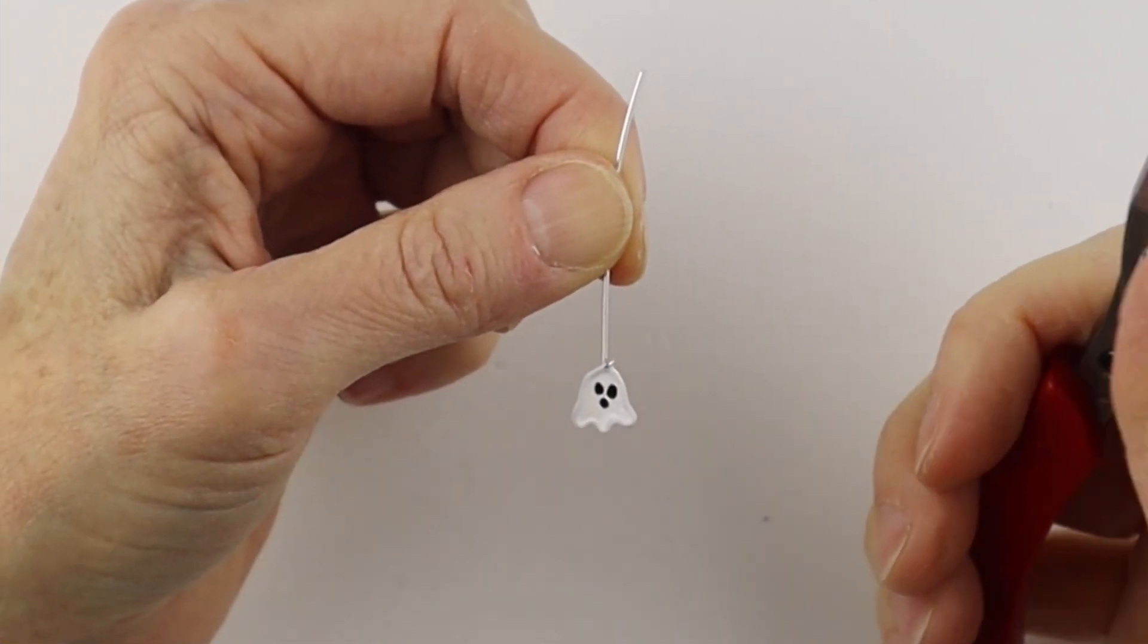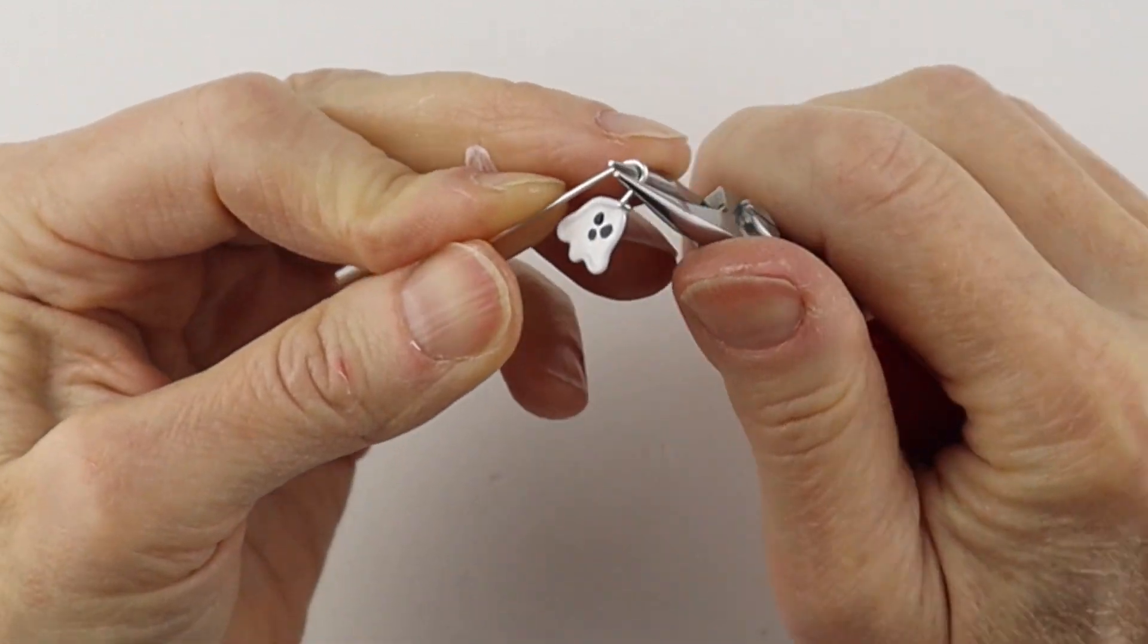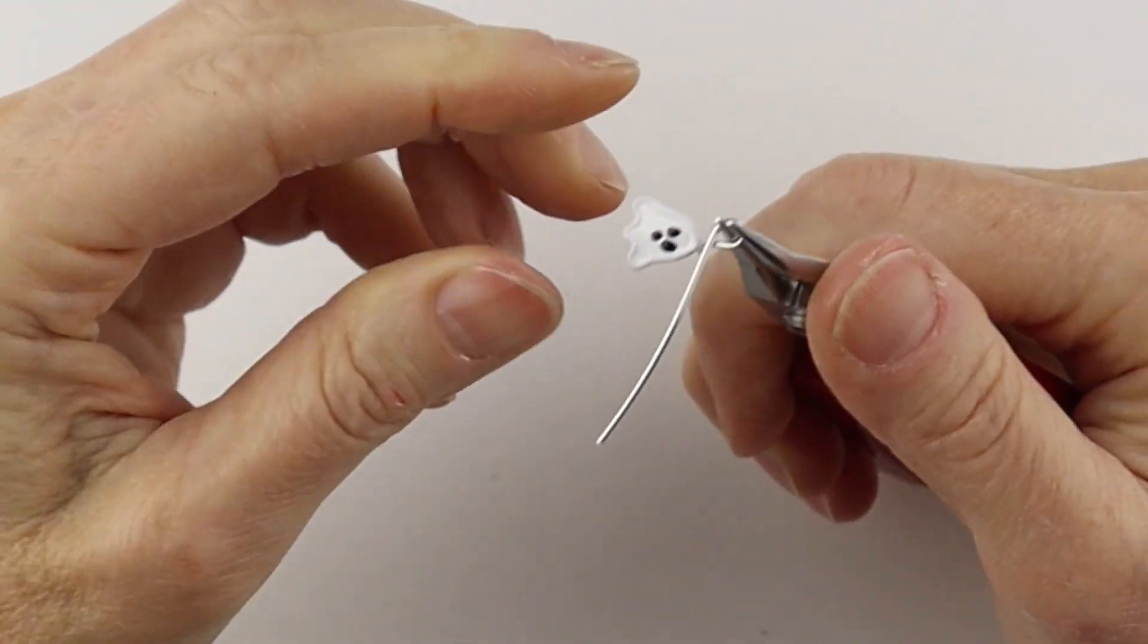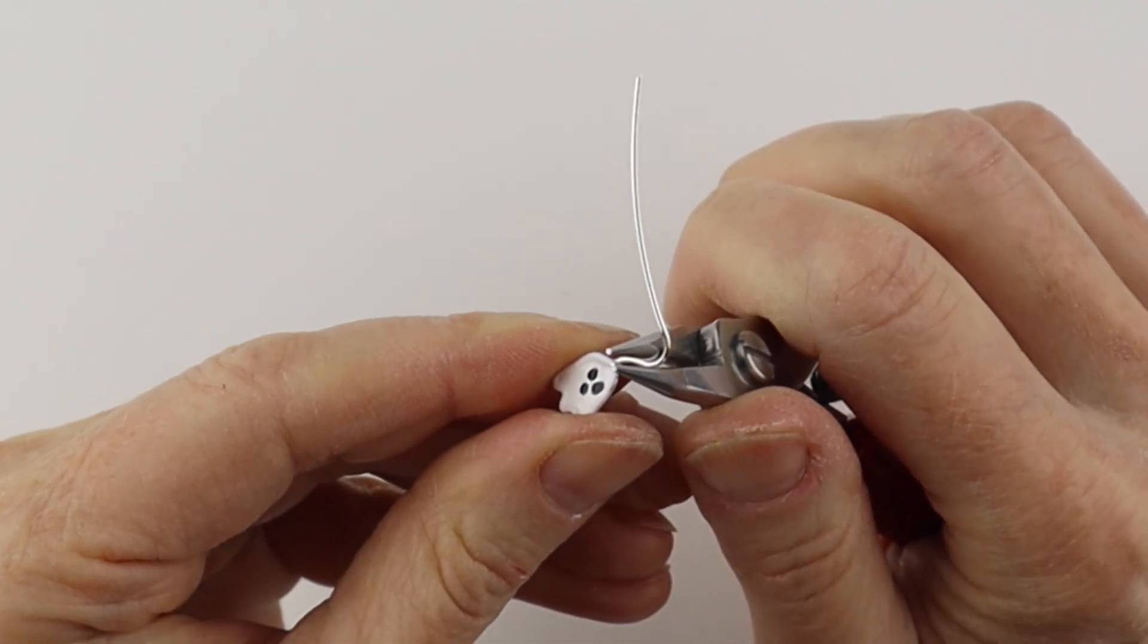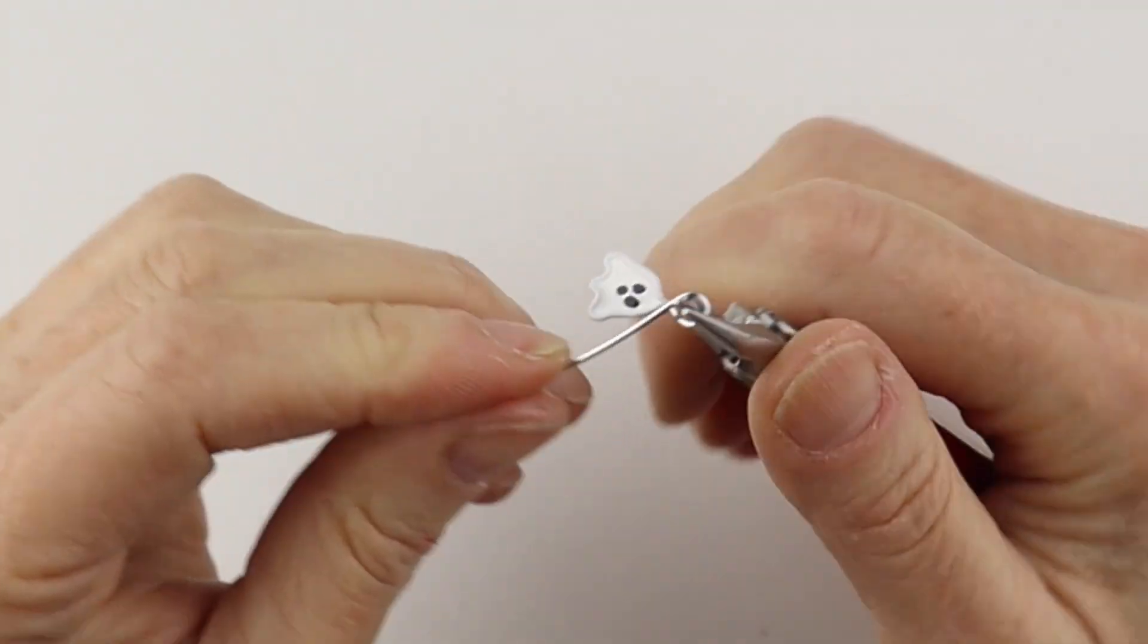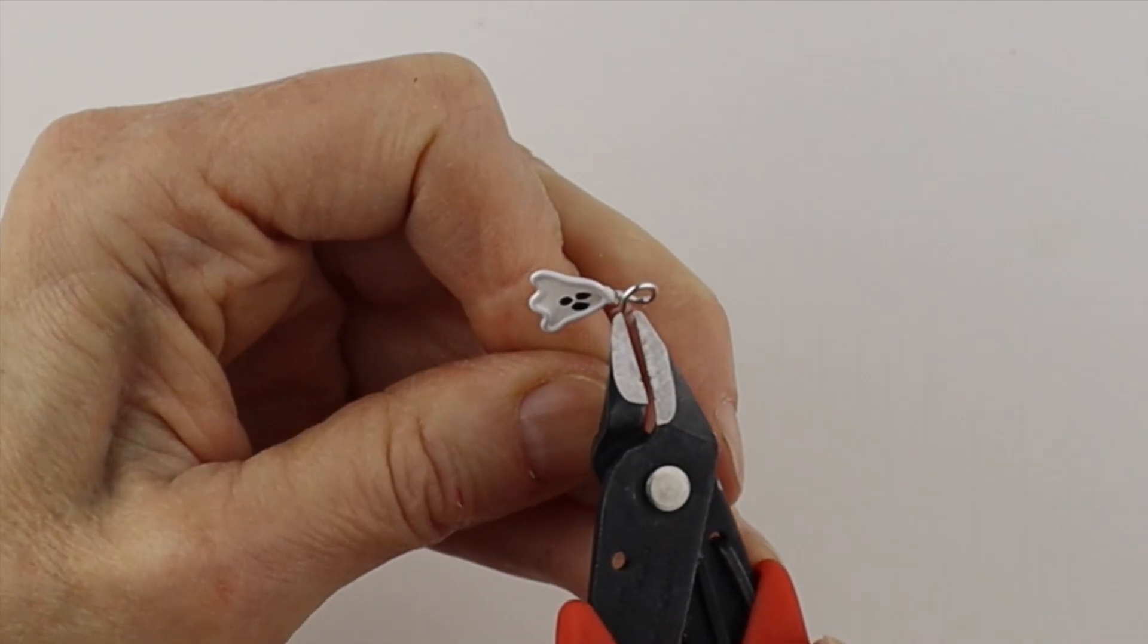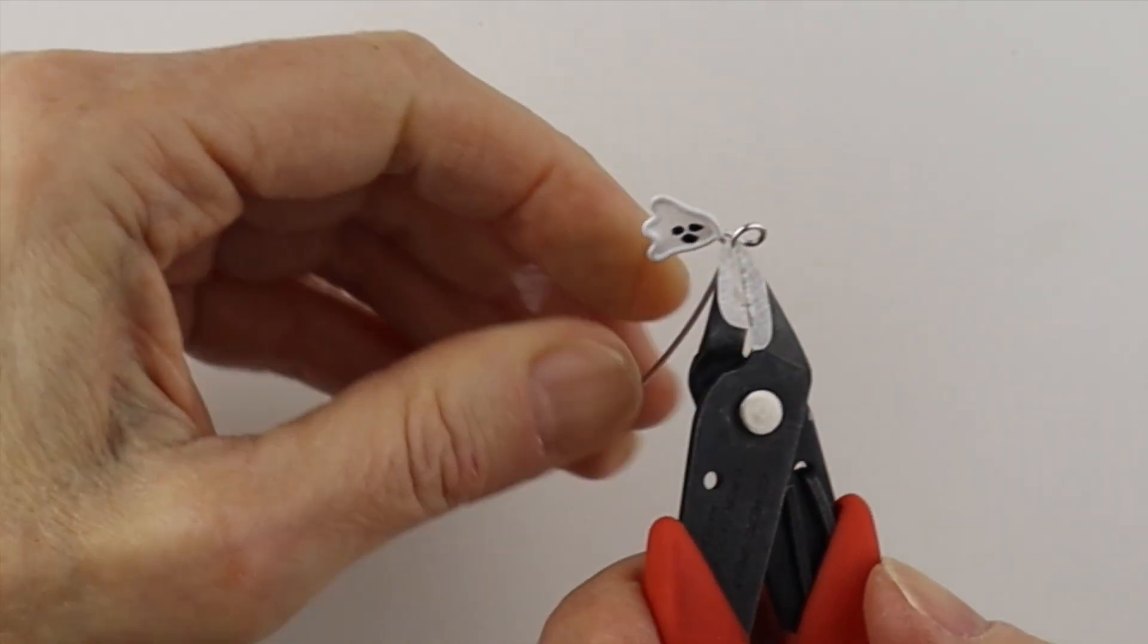I probably should have done the loop before I painted it. We're just going to put our round pliers and bring this one around. I usually like to bend this over to one side but it's a little tricky once it's painted. So then we're going to bring this one all the way around and give it a little clip there.